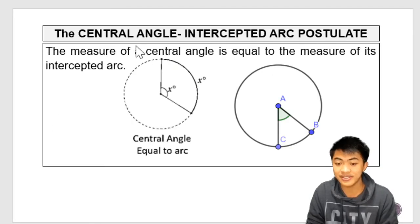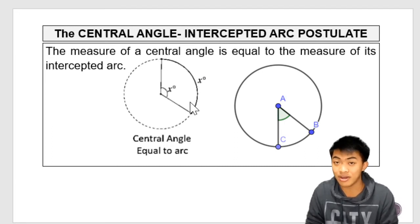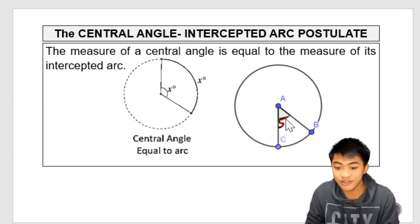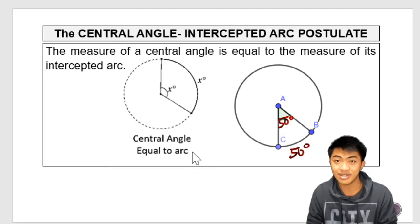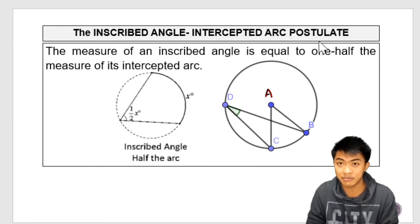So we have here the central angle intercepted arc postulate. What does it say? It says that the measure of a central angle is equal to the measure of its intercepted arc. So if you have here a central angle, and if the central angle is like 100 degrees, well, its intercepted arc will also measure 100 degrees. A central angle and its intercepted arc has the same degree measures. So if this is 50 degrees, well, its intercepted arc will also be 50 degrees.